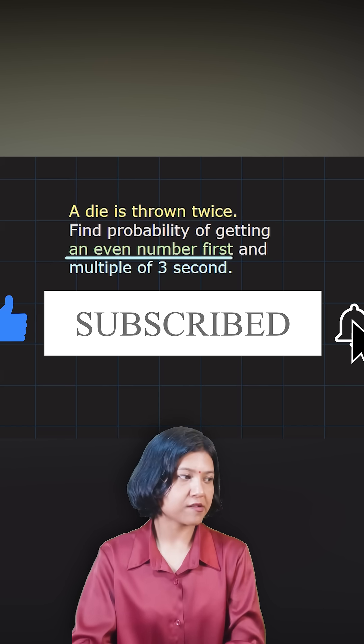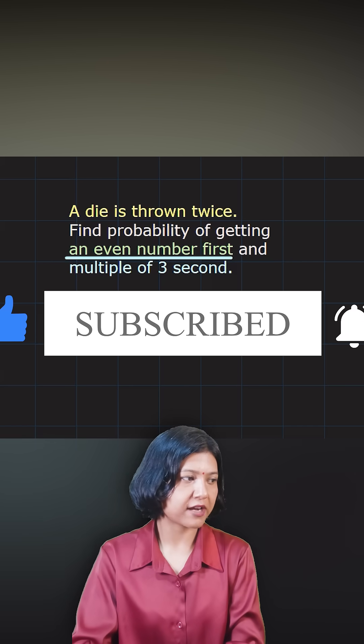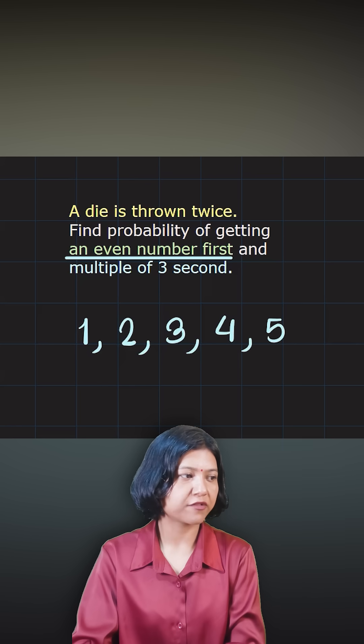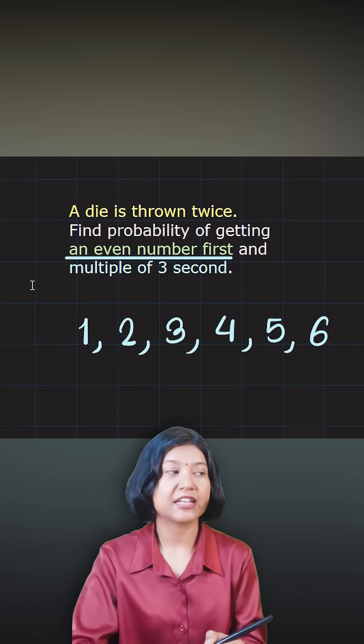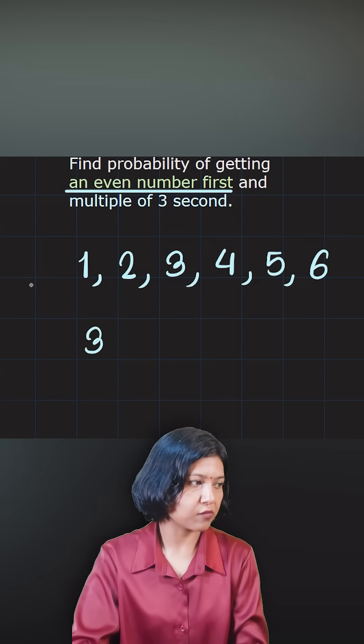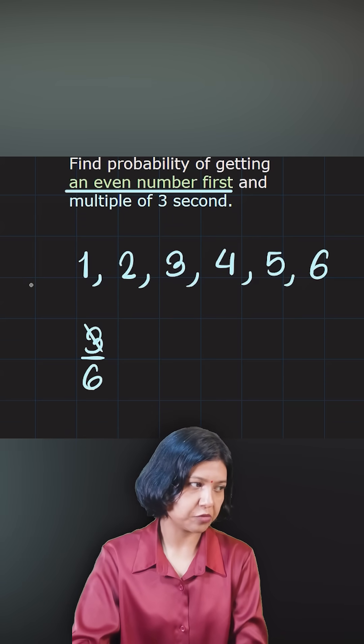We have three even numbers: one, two, three, four, five, six. So a total of three even numbers out of six options. So probability of getting an even number will be three out of six which is just one upon two.